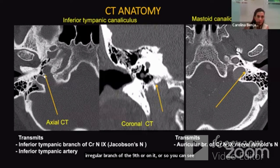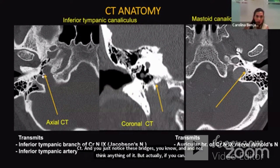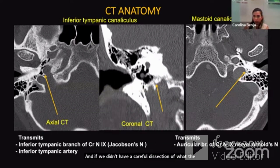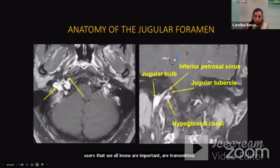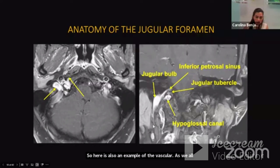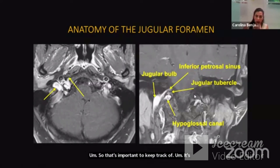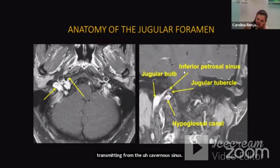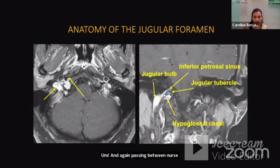If you're not looking carefully, you may notice bridges on CT and not think anything of them. But a careful examination of CT shows the canals through which these important nerves are transmitted. The inferior petrosal sinus drains into venous lakes, eventually emptying into the medial aspect of the jugular bulb, transmitting from the cavernous sinus. It passes between cranial nerve IX anteriorly and cranial nerves X and XI posteriorly, so its medial-to-lateral location in relationship to these nerves is important.